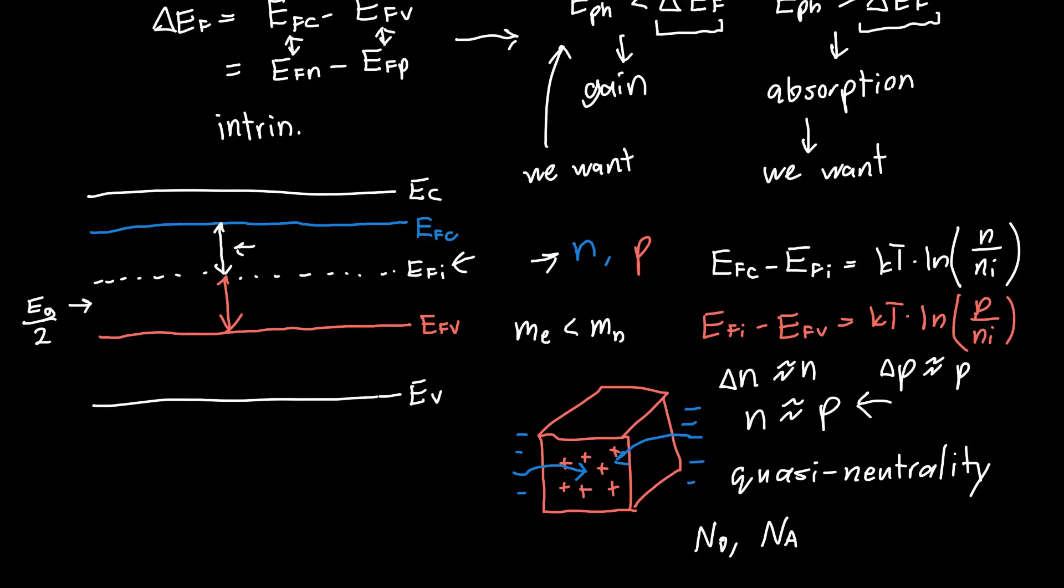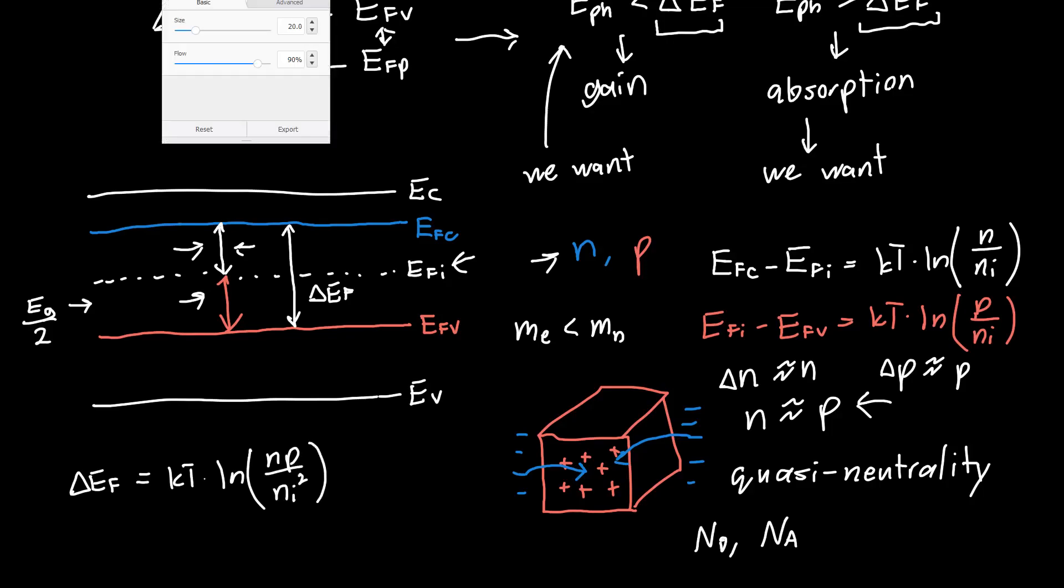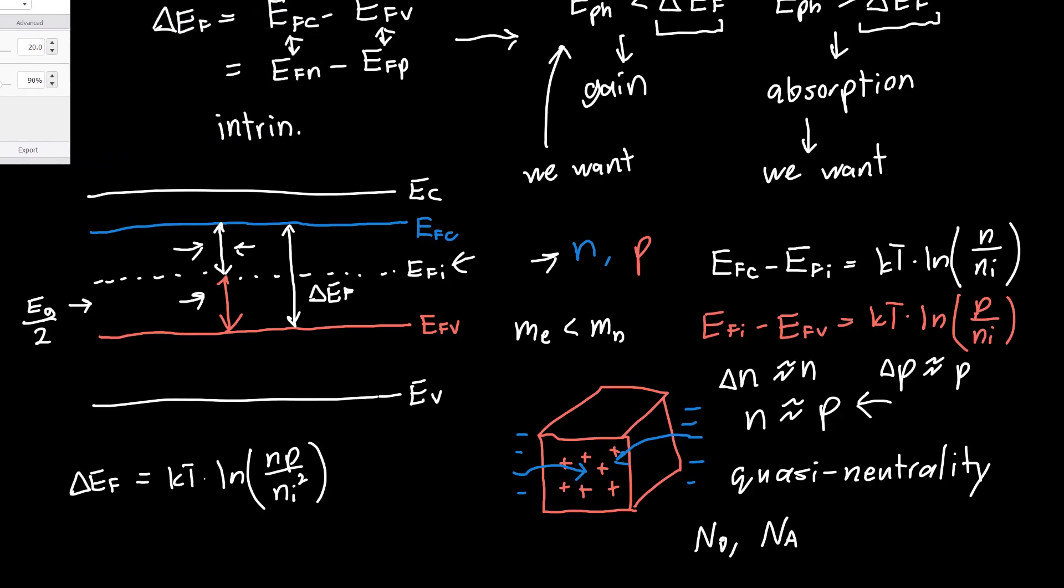And so if we make that assumption, then we can calculate this total quantity, delta EF, pretty easily. It's just this distance plus this distance. So it's equal to kT times the natural log of NP over Ni squared. Or if we want to rewrite that just in terms of N or just in terms of P, we could write that as kT log of N squared over Ni squared. Or we could have done P squared over Ni squared.